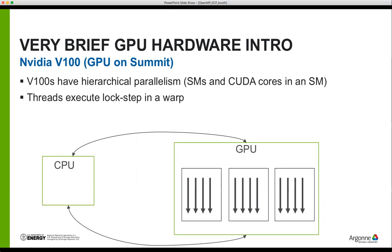Two examples of thread divergence we ran into are load imbalance and branching. For load imbalance, one thread takes longer to compute something than others. For branching, the warp has to execute the same code once for every branch with part of the warp masked out. That was just a bit of background about porting to GPUs to keep in mind for what I talk about later in porting GAMESS.